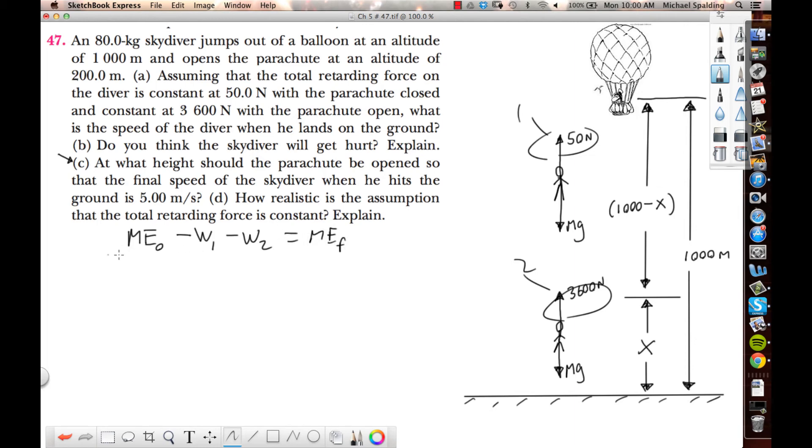So again, the main idea here is mechanical energy initial. It's going to be minus work one, minus work two. This force right here, we're calling force one. This one right here is force two. And then this is going to equal mechanical final. So again, three types of mechanicals, kinetic initial, gravity initial, spring initial, minus work one minus work two, and then that's going to equal kinetic final, gravity final, spring final. Does this problem have any springs? No. So cancel the springs out.